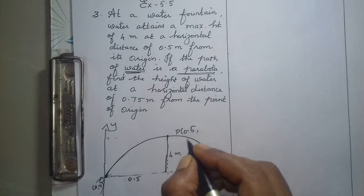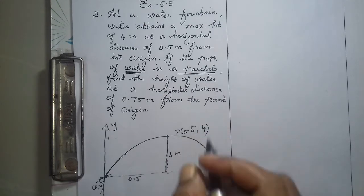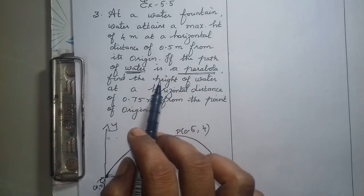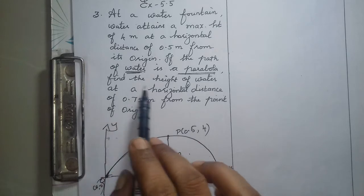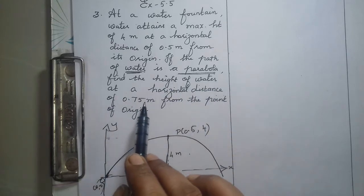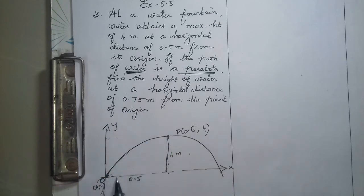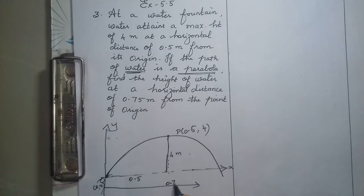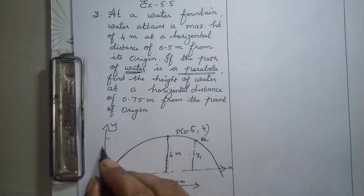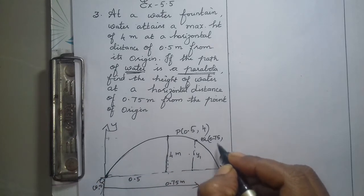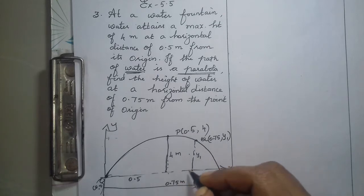Write 0.5 for horizontal distance and 4 for the vertical distance. Next, find the height of water. You have to find the height of water at the horizontal distance of 0.75 meters from the point of origin. So this is the origin — measure 0.75 meters. This distance is 0.75 meters. When it is 0.75 meters, we have to find the height. This is y1. Assume the height is y1, and name this point as Q. Horizontal distance is 0.75 — mark it as 0.75. The vertical distance we have assumed as y1; that value we will find out.